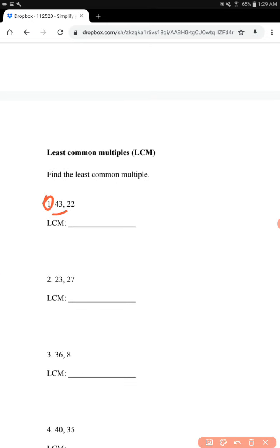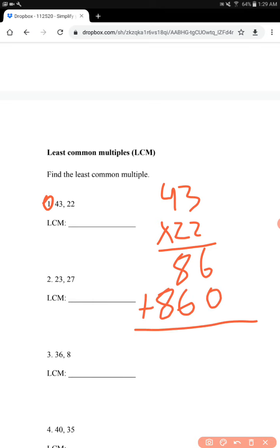So for number 1, 43 times 22. In order to get the solution to this problem, it'd probably just be easier to just multiply. So 43 times 22 is 6, 8, 0, 6, 8, add those, 6, 14, and then 9. And you get 946. Pretty easy.